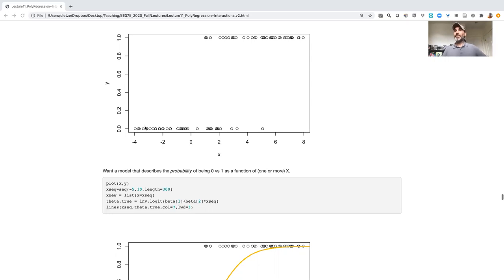Remember that probabilities can't be negative. They can't be bigger than one. And so clearly linear models rarely meet that—a straight line rarely meets that assumption. So how do we deal with this?